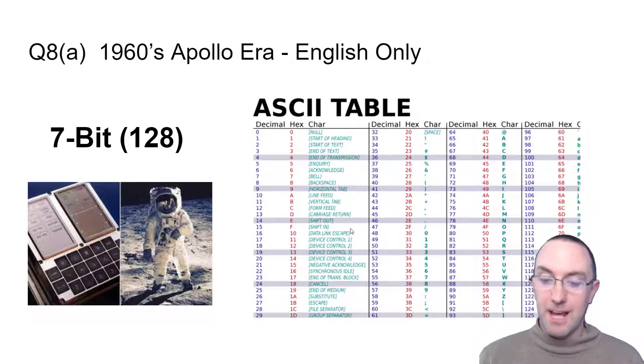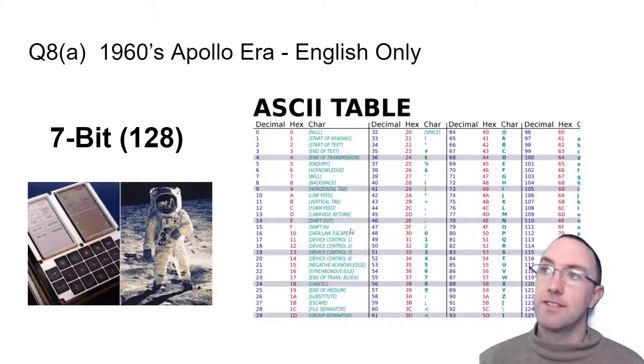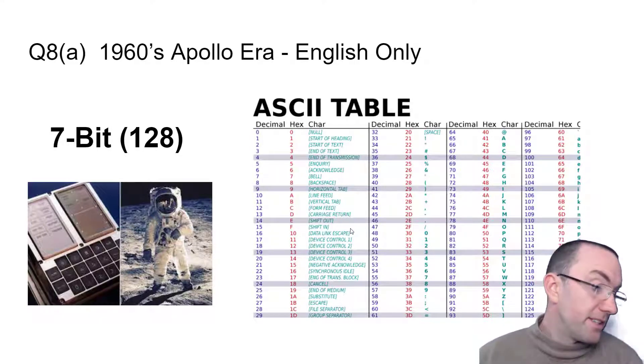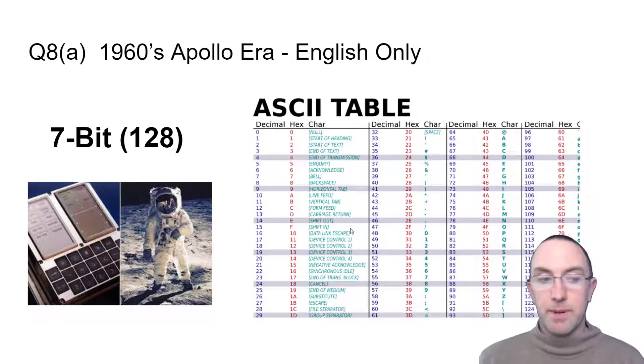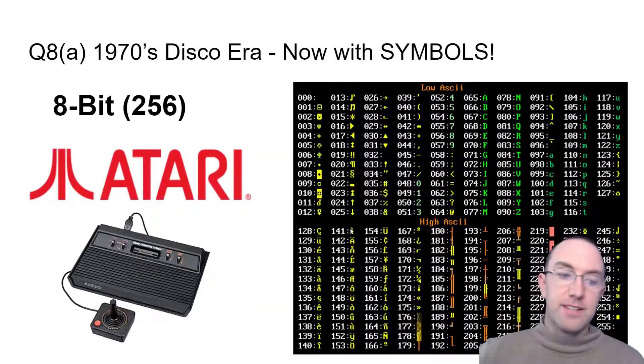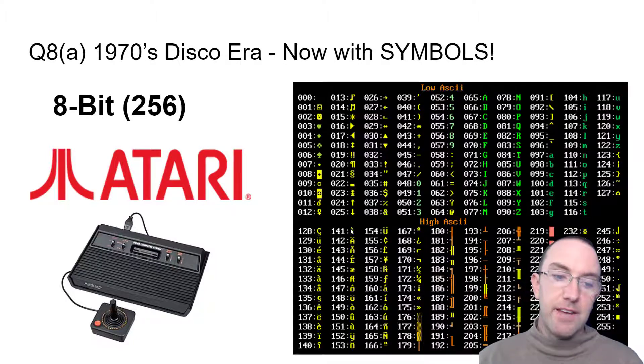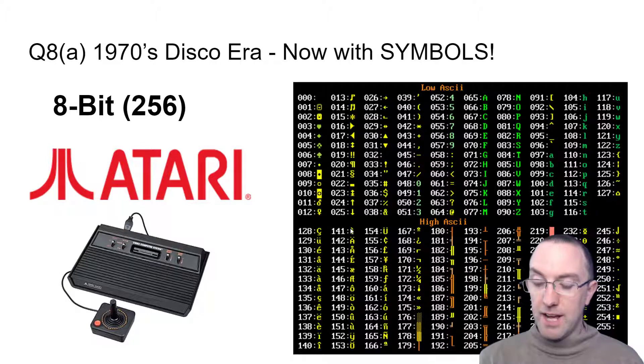So there's only 128 possibilities here because there's seven bits. Imagine seven little switches. That's another question you could be asked: how many possible pieces of information could be stored by seven bits? The answer is 128. So eight bits is going to be twice that, and actually that's what they did. They extended this on in the 70s so you could have kind of symbols.